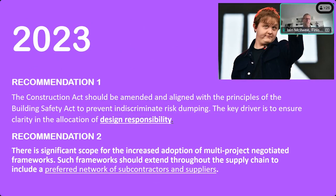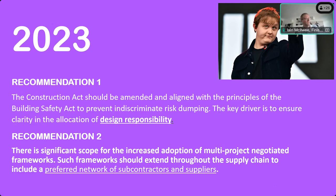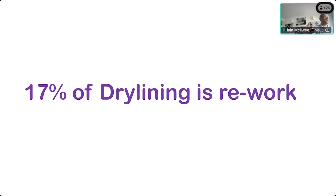That brings us to the conclusions from Stuart Green's work. The two big recommendations are that changes to the Construction Act should align with the principles of the Building Safety Act — preventing risk dumping and ensuring clarity in allocation of design responsibility. There needs to be a clearer design-freeze process and more time through negotiated, multi-stage project procurement. And this isn't just about safety: the reality is that 17% of dry-lining work is rework — somewhere along the line, the programme, the design or workmanship is causing dry lining to be redone.